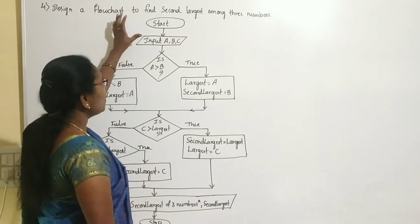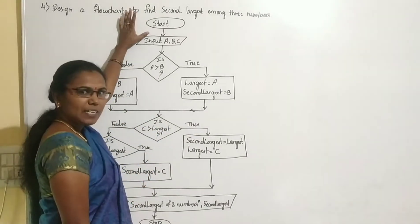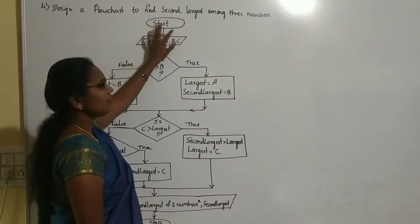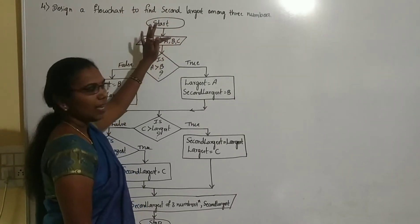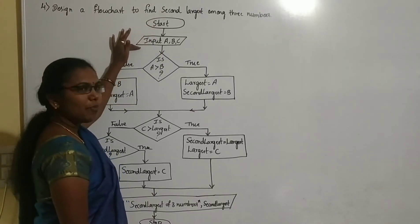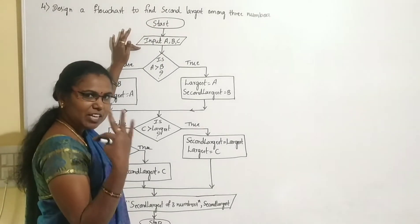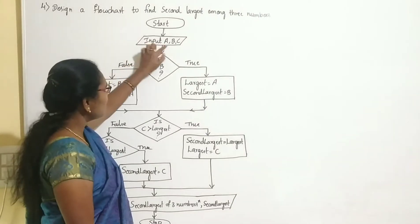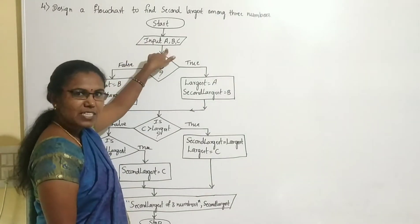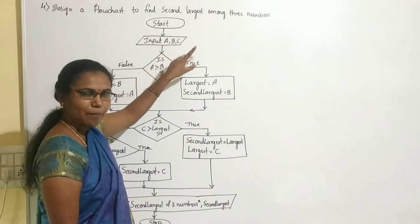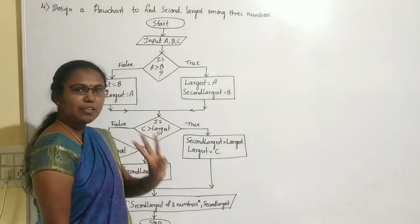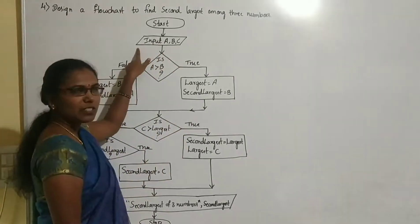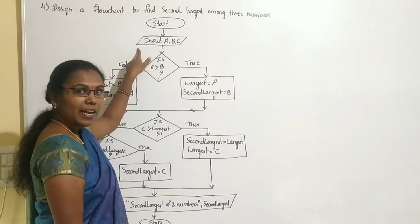The flowchart starts with a start symbol, written using the oval symbol. Next, we read the input values. We require three variables as input — I will take them as A, B, and C. The inputs are represented using the parallelogram symbol.